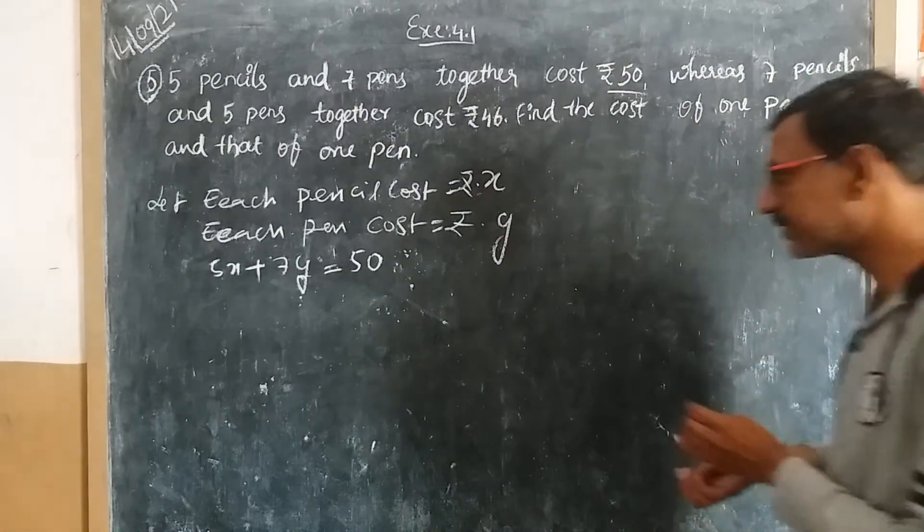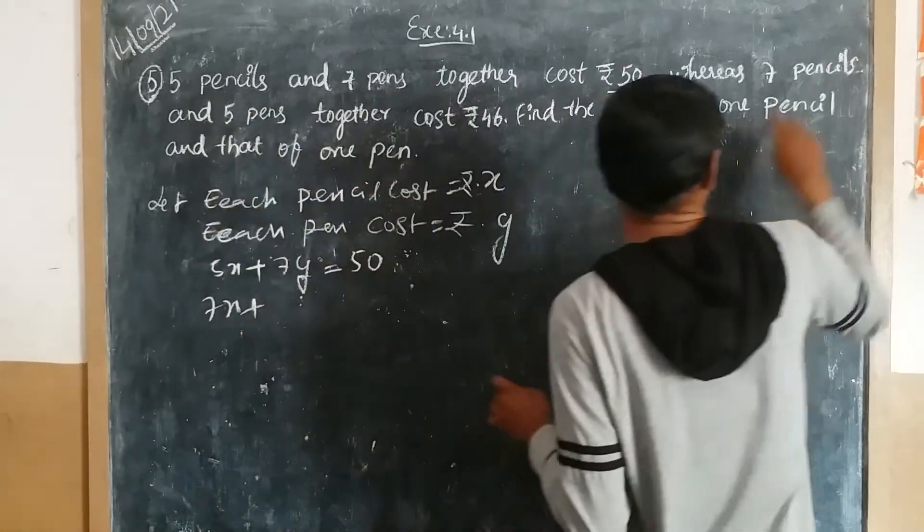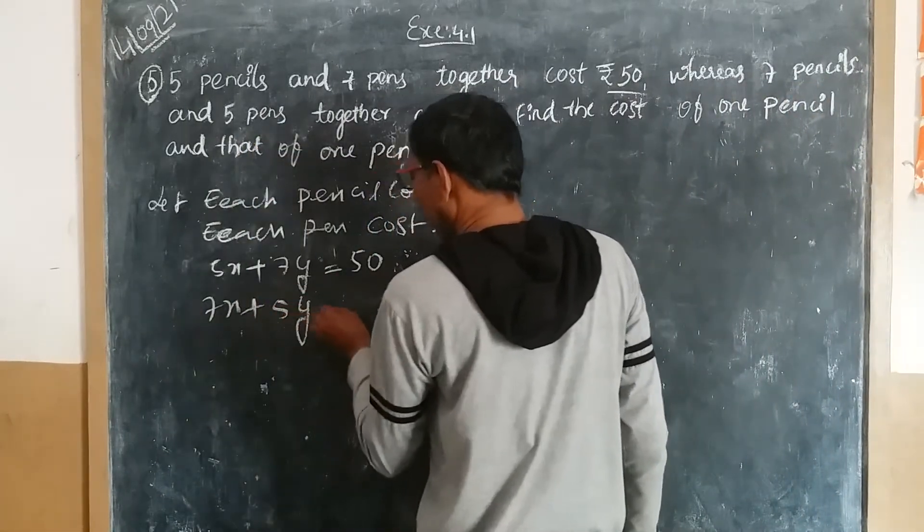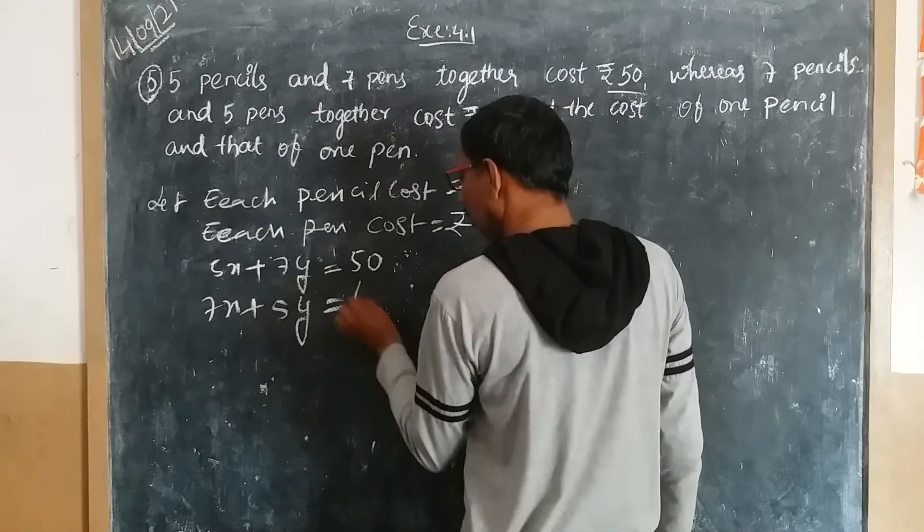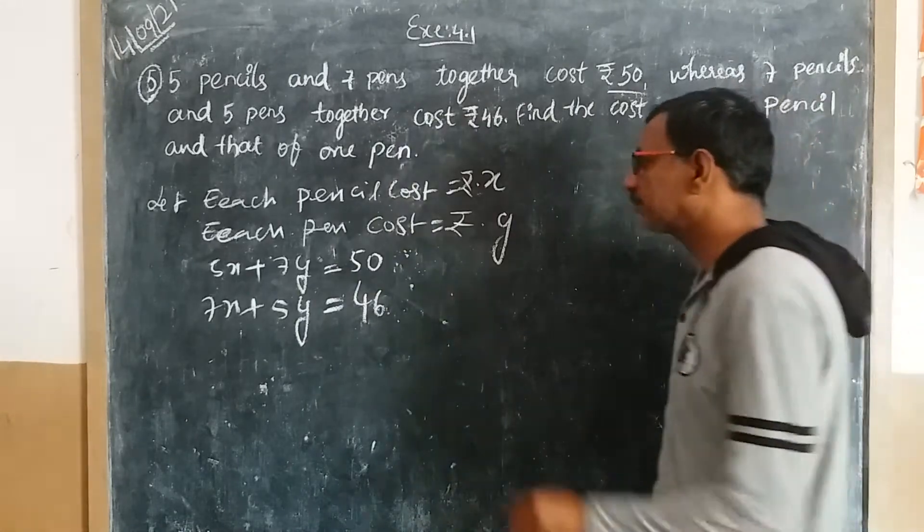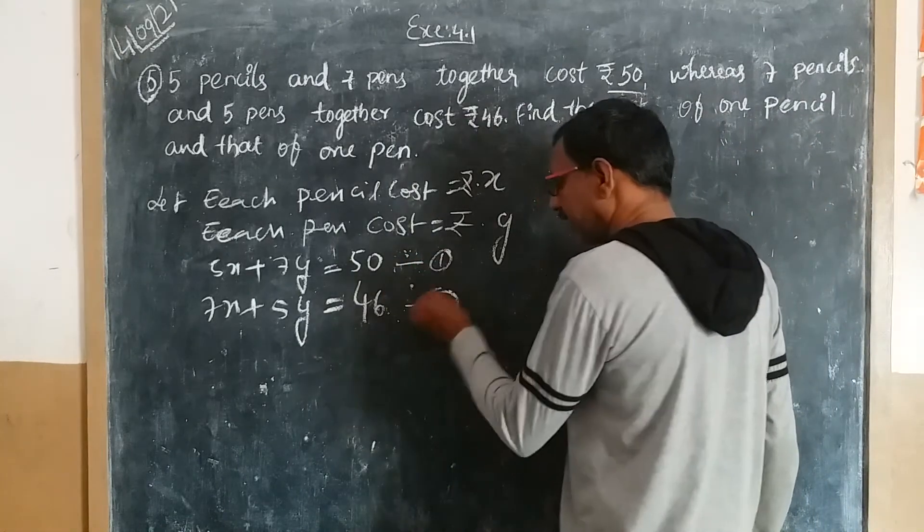Now coming to the second statement. Seven pencils: 7x, plus five pens: 5y, equals 46 rupees. So 7x + 5y = 46. This is equation one and this is equation two.